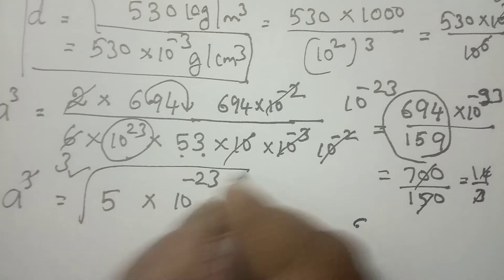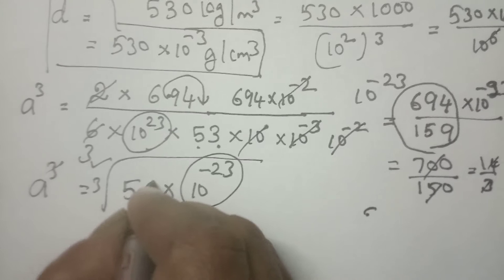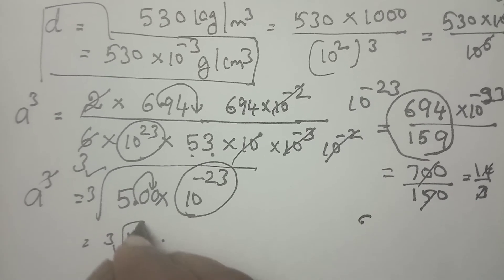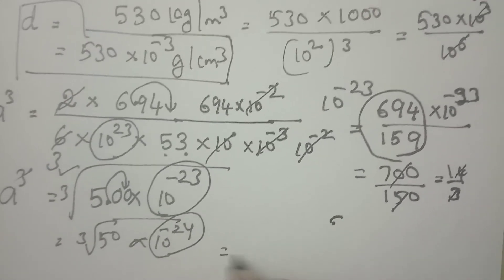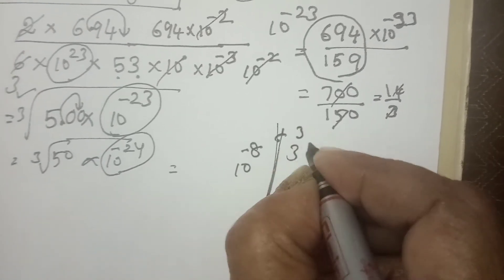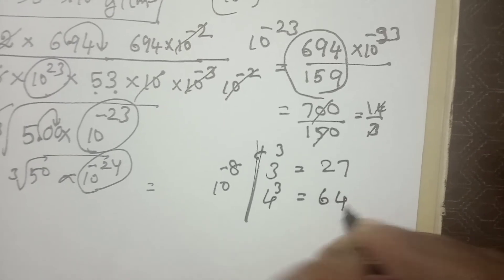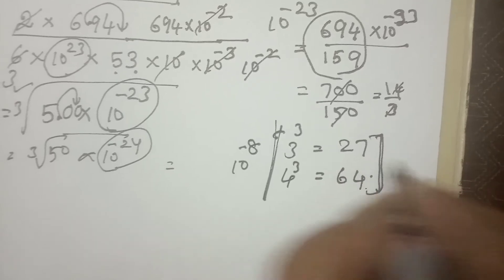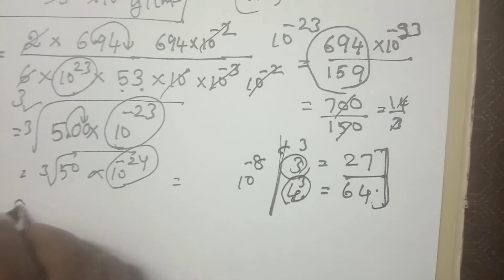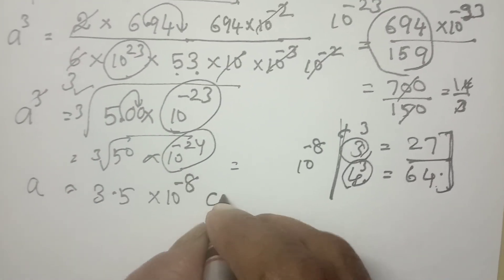Now to remove the cube, we take the cubic root. Rewrite 5×10⁻²³ as 50×10⁻²⁴. Cubic root of 10⁻²⁴ is 10⁻⁸. For cubic root of 50: 3³=27, 4³=64, so 50 is between 3 and 4, approximately 3.5. Therefore A is approximately 3.5×10⁻⁸ centimeter.